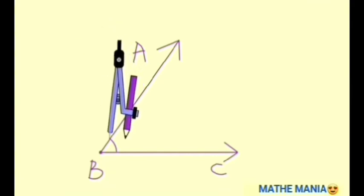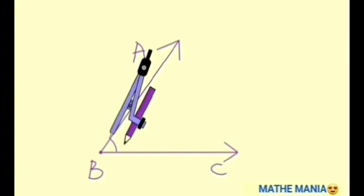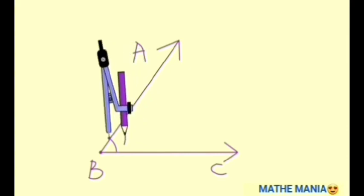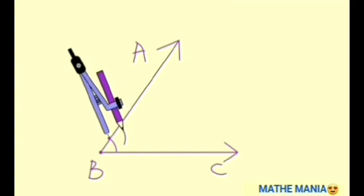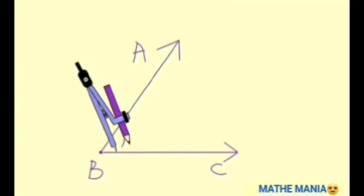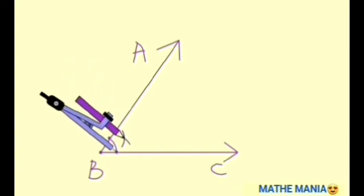Keeping our compass on one of the endpoints as center, we will draw an arc in the interior of this angle. Now, keeping our compass at the other endpoint of the arc, we will draw another arc intersecting the previous arc at a point.